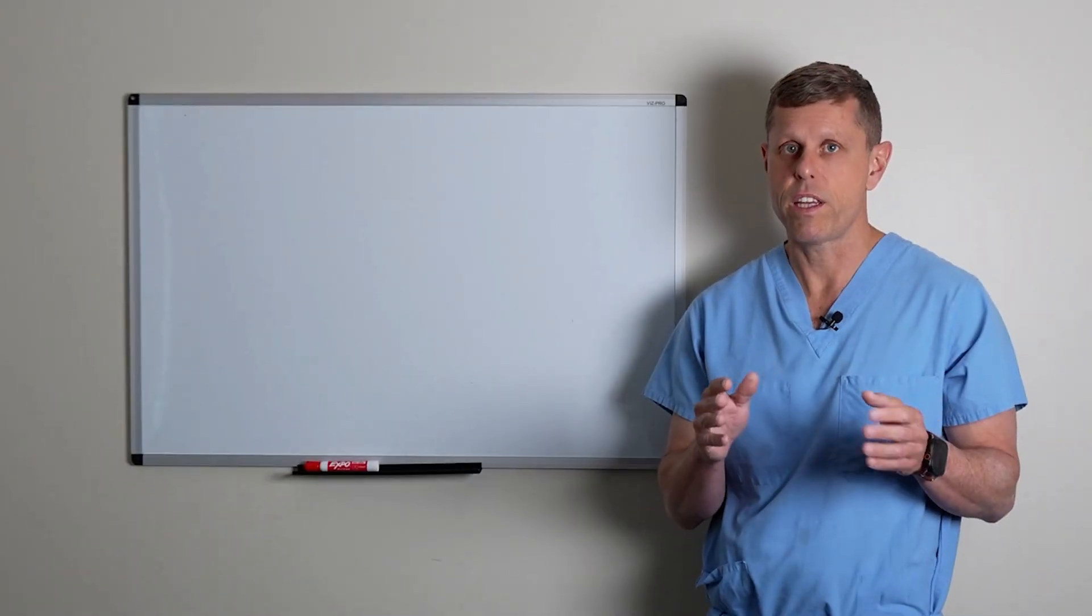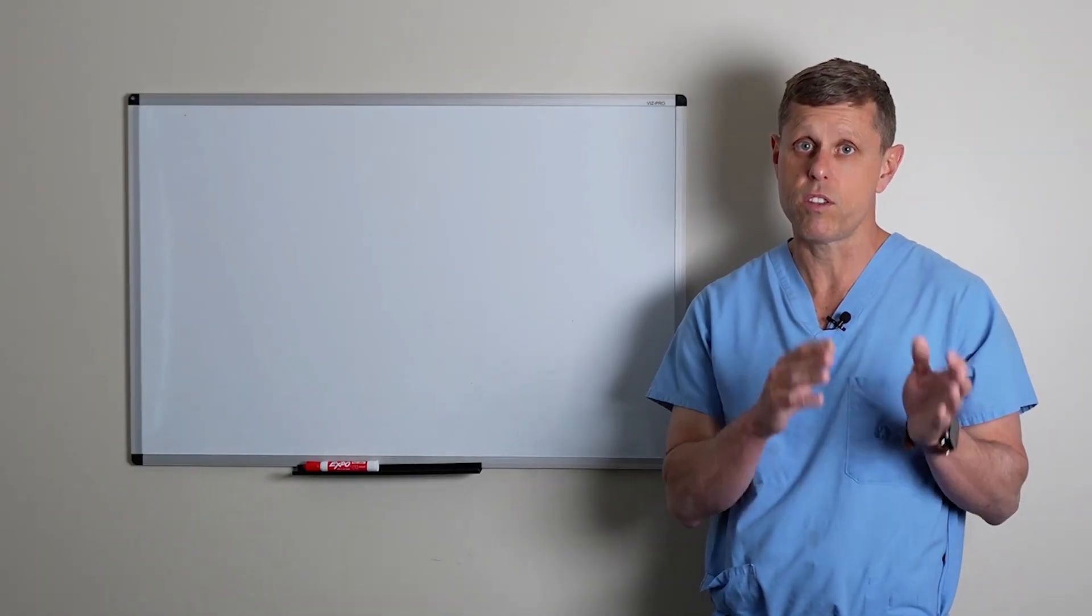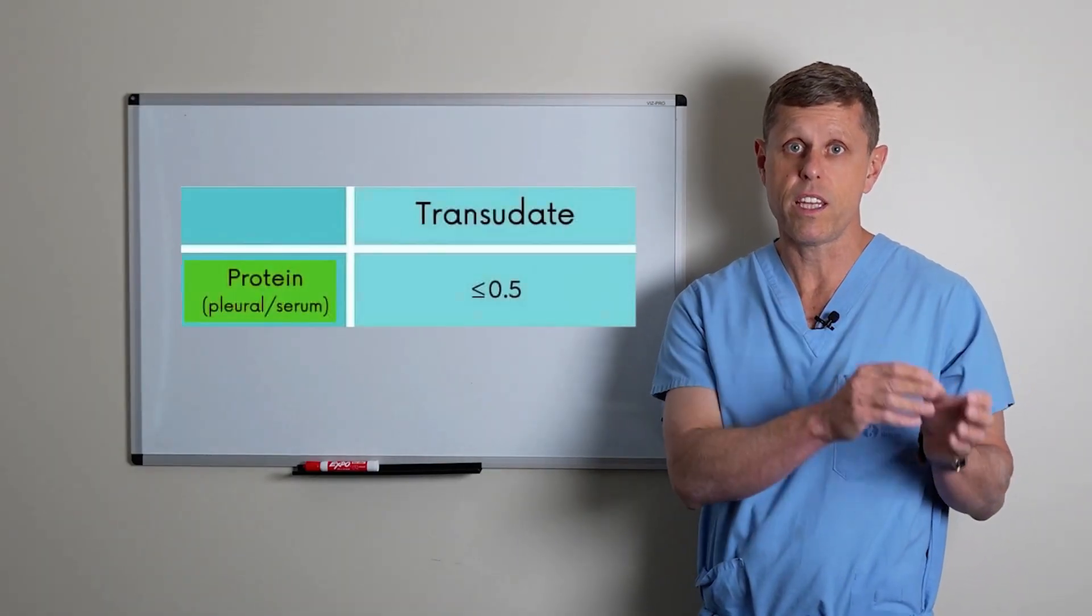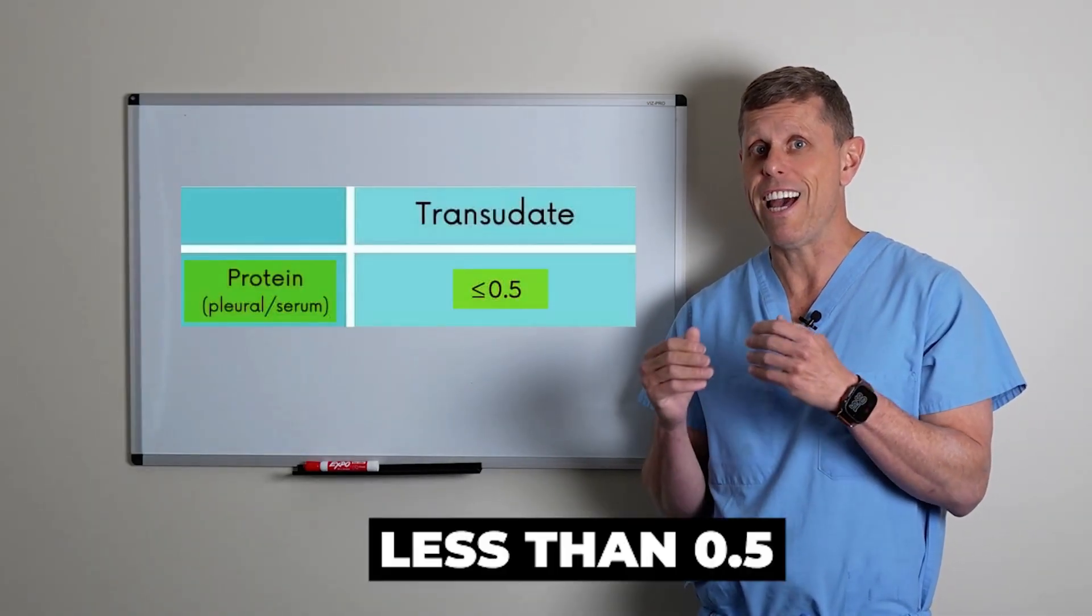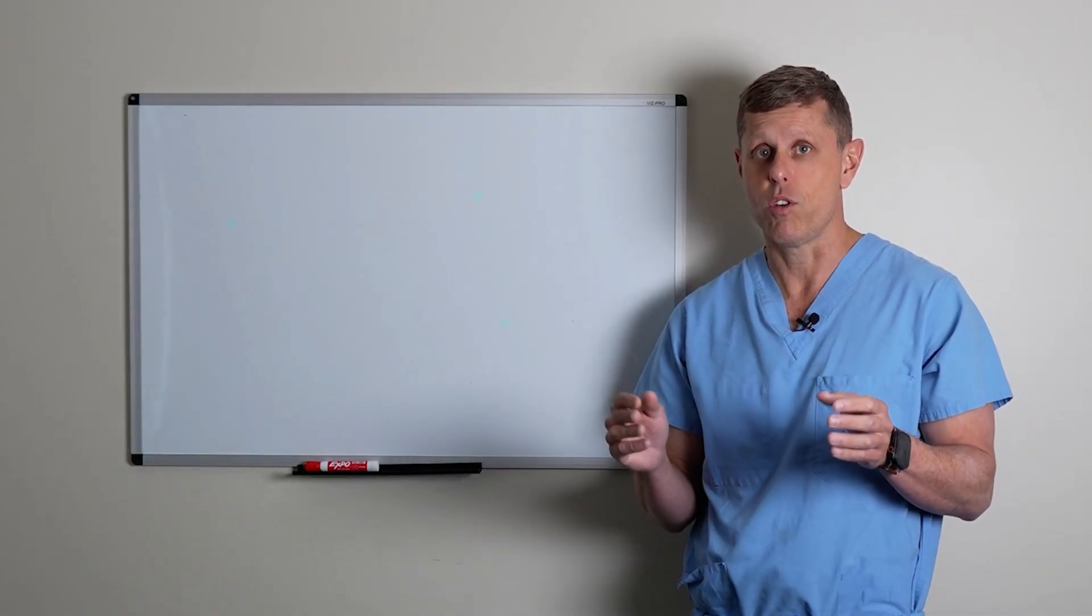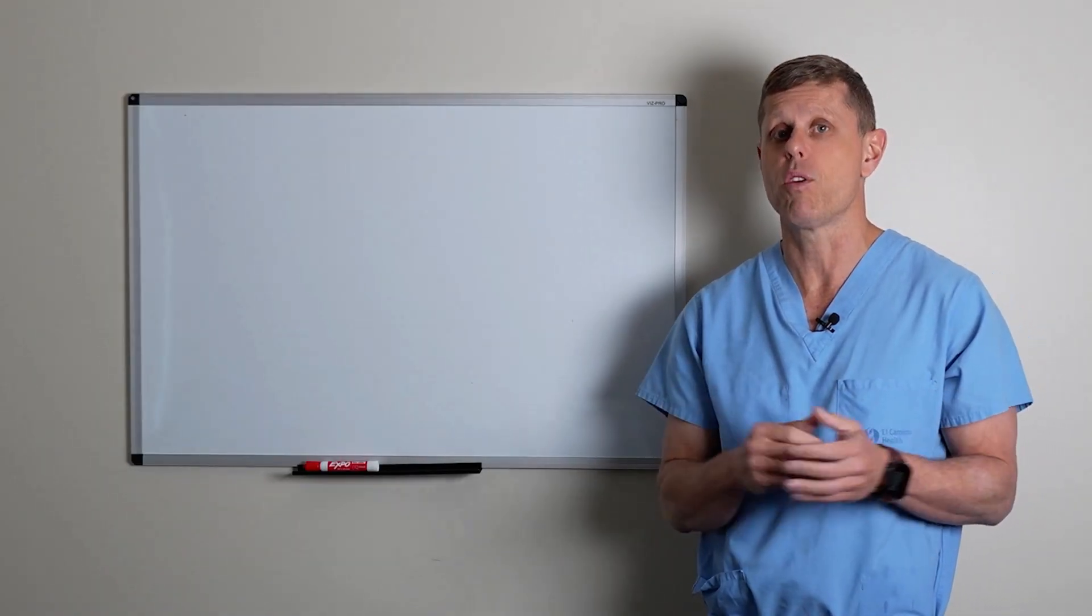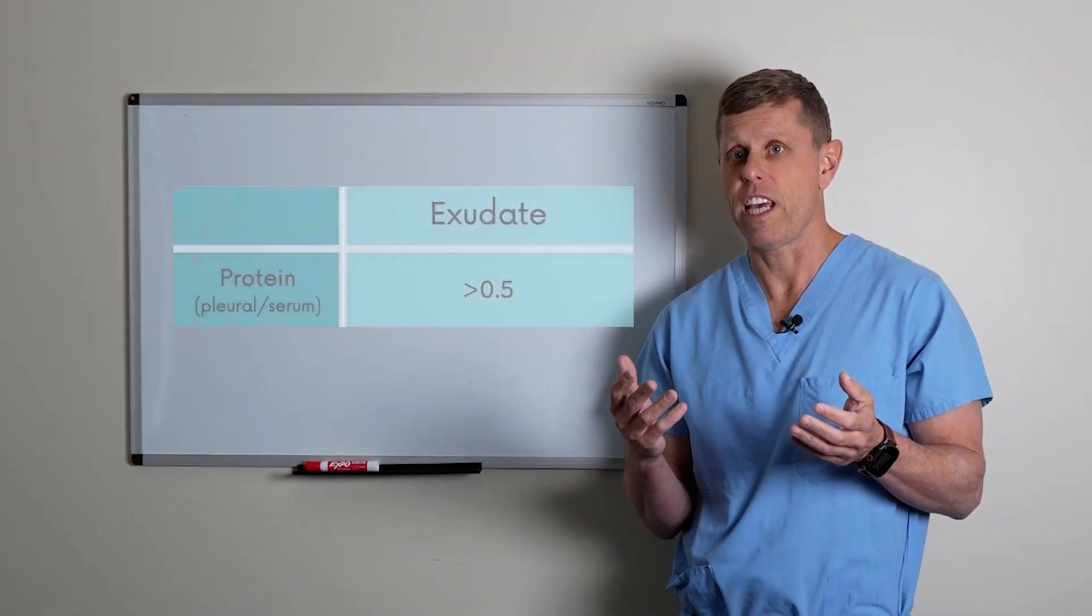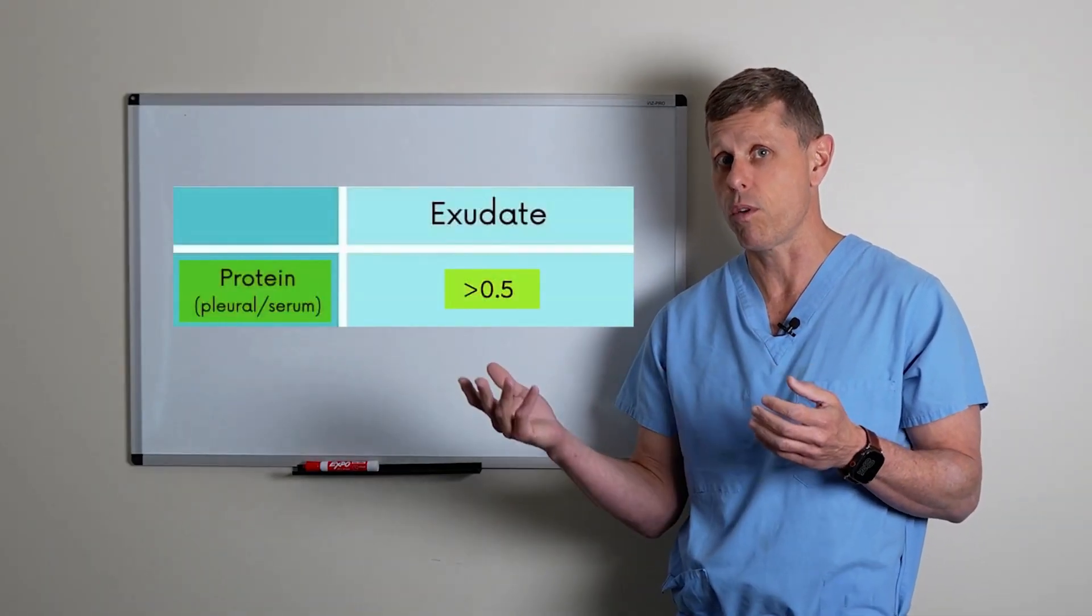This really helps us to differentiate between these large groups, and here's the criteria that we use to differentiate a transudate from an exudate. In the transudate, the protein in the fluid divided by the protein in the blood is less than 0.5. So the protein in the fluid is 50 percent or less than the protein in the blood. If it's an exudate, then the protein in the fluid is more than 50 percent of the protein in the blood.